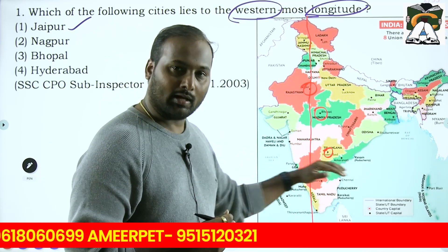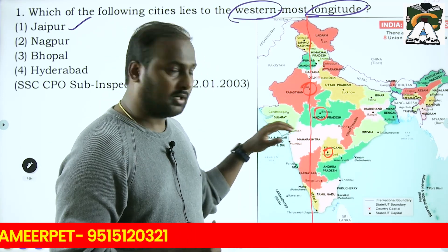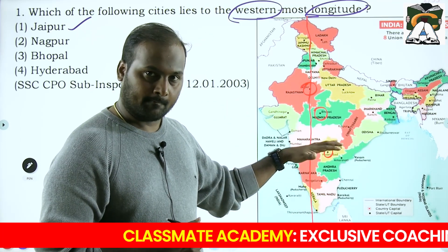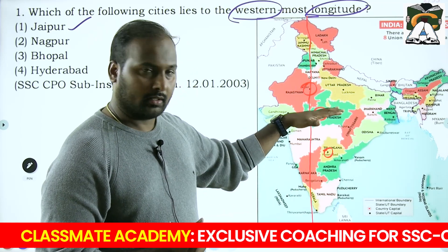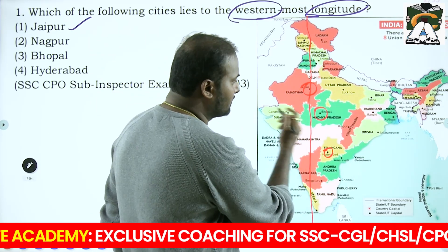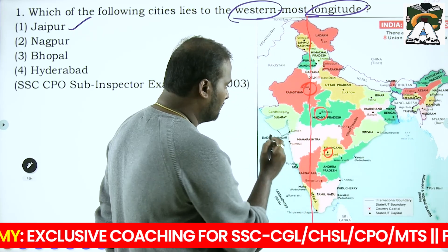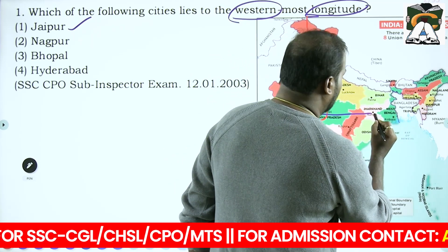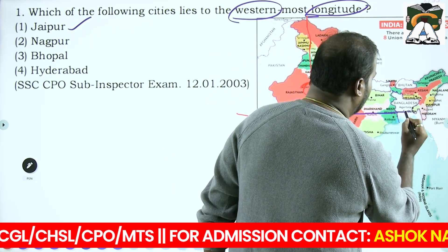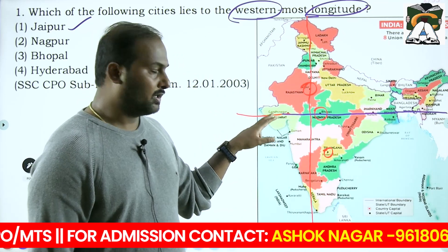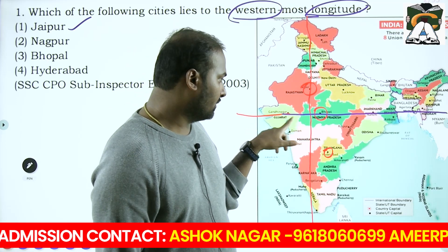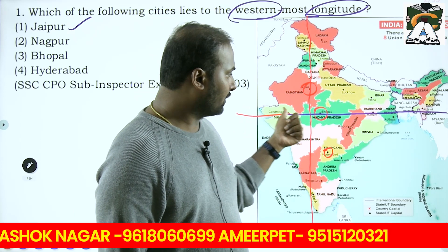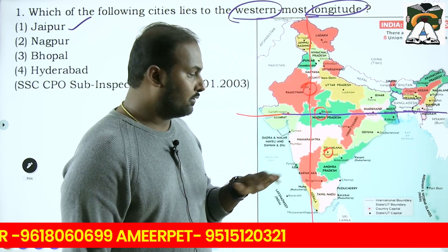What you must remember for your exam is not only the longitude but also the latitude. You can expect more questions from latitude as well. The first and foremost latitude is the Tropic of Cancer, which passes through 23.5 degrees north latitude. The closest cities to this latitude are Gandhinagar in Gujarat, Bhopal, Ranchi in Jharkhand, West Bengal, Tripura and Agartala. Gandhinagar, Bhopal and Ranchi are all very close to the Tropic of Cancer.